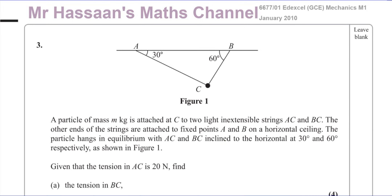Welcome back, this is Mr. Hassan's Maths Channel. I'm now answering question number 3 from the January 2010 GCE Mechanics M1 paper from Edexcel. This is one from the old spec, but it's very much relevant to what we do now. So here we have a question on statics where a particle of mass m kilograms is attached at C to two light and inextensible strings AC and BC. The other ends of the strings are attached to fixed points A and B on a horizontal ceiling. The particle hangs in equilibrium with AC and BC inclined to the horizontal at 30 degrees and 60 degrees respectively. Given that the tension in AC is 20 newtons, find the tension in BC.